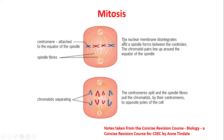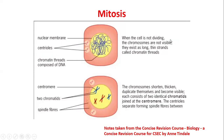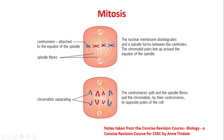The nuclear membrane then disintegrates — it disappears. The spindle fiber forms between the centrioles. The chromatid pairs line up around the equator of the spindle — equator here just means the middle. We can see the centromere attached to the equator of the spindle fiber.